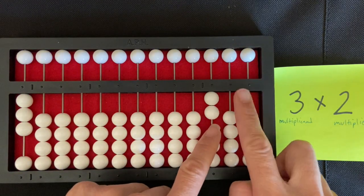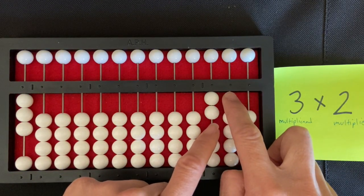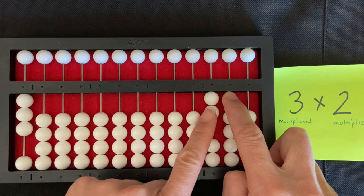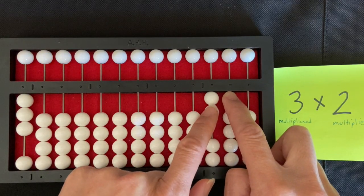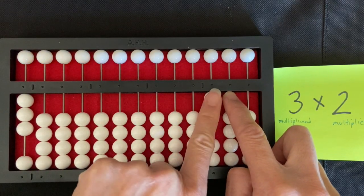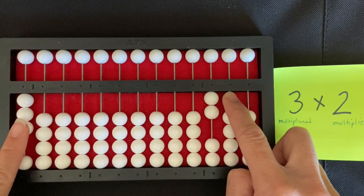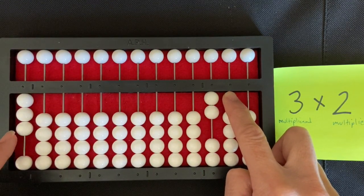Now I'm going to move my right index finger to the immediate right of my multiplier, and I'm going to use my left index finger to read my problem. Let's start here, two times three. Two times three is six.